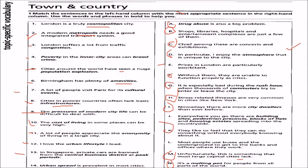Thirteen: in Singapore, private cars are banned from the central business district (CBD) at peak periods. We match it with L — most people use buses and the underground to get to the banks and offices where they work.